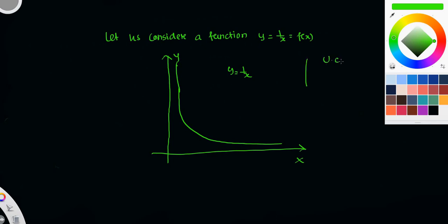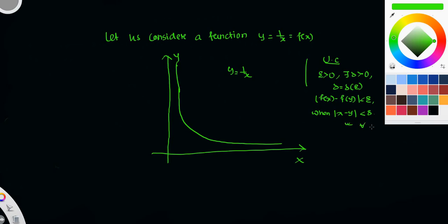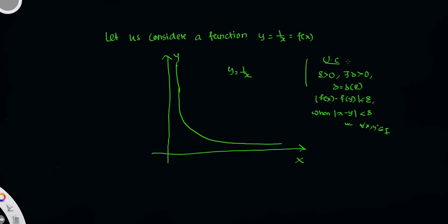So to check if this function is uniformly continuous, by definition, for every epsilon greater than 0, there exists a delta greater than 0 and delta only depends on epsilon. If mod of f of x minus f of y is less than epsilon when mod of x minus y is less than delta, for all x, y belonging to the domain of the function, then we can say the function is uniformly continuous.